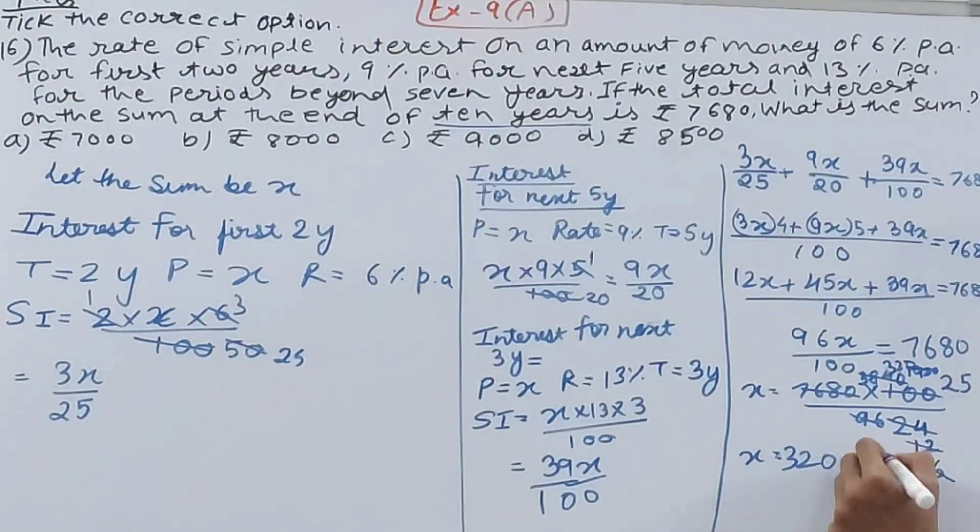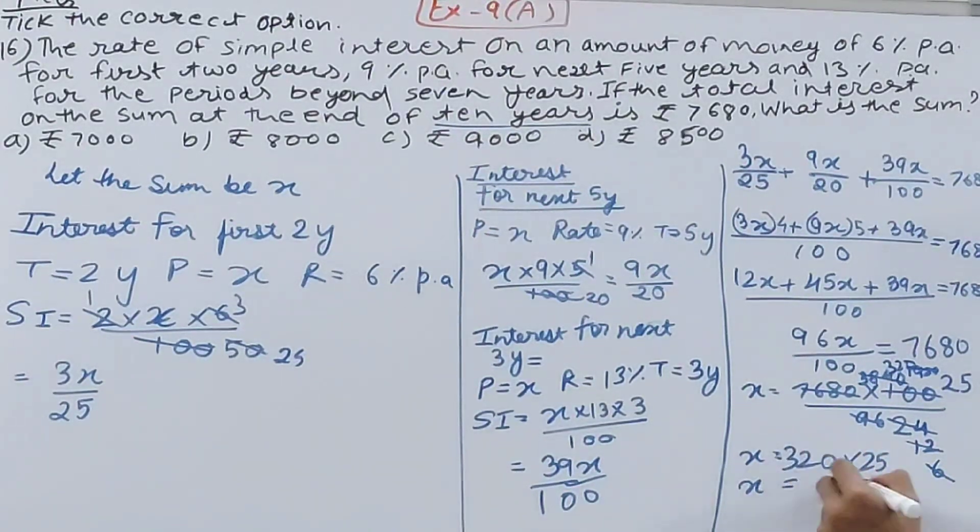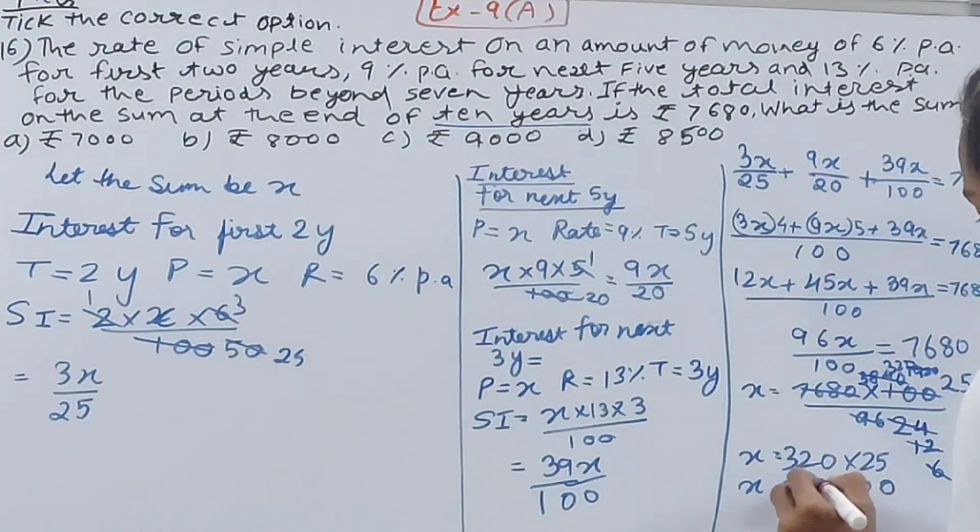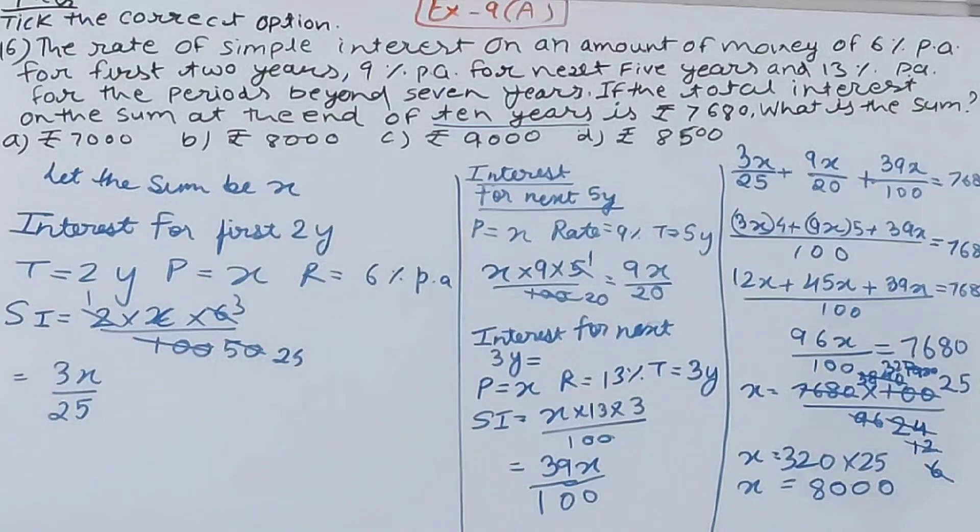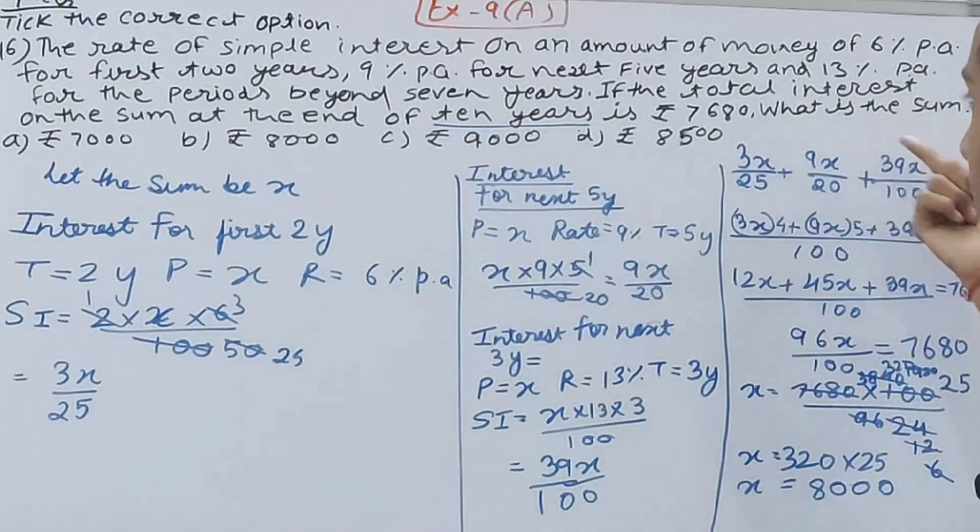We have 320 here. So basically x equals 320 times 25. So x equals 0, 50, and 5, so 75 and 5, 80. That is 8000. So you can see the value of x is 8000.